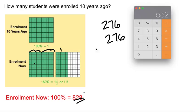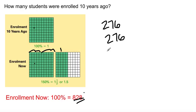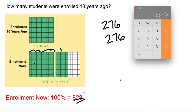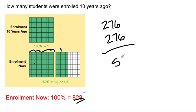552. So enrollment 10 years ago. What was that again? It's 552. 552 was enrollment from 10 years ago.